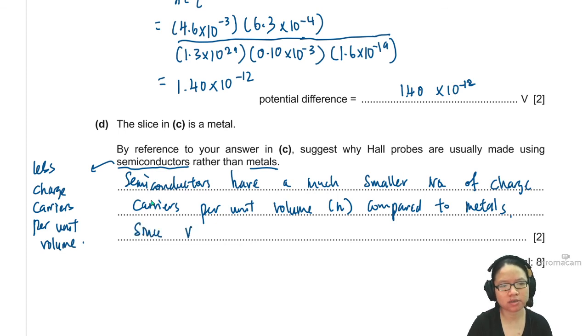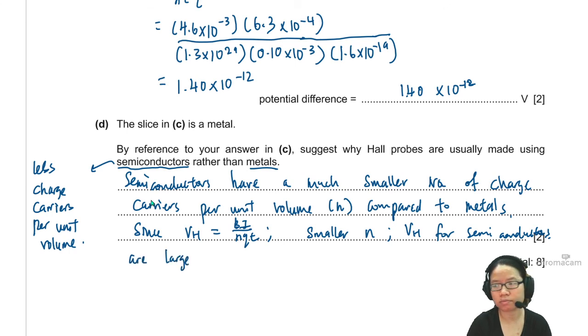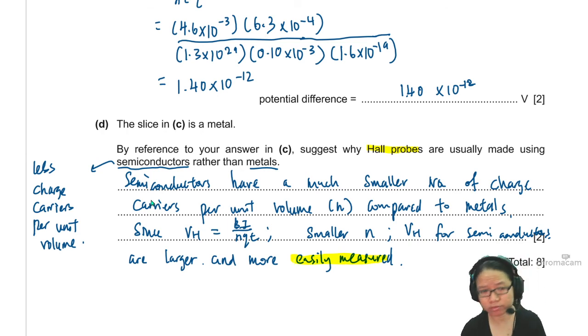You can say since VH is equal to BI over NQT, smaller N means there is a... This means VH for semiconductors are larger and more easily measured. Don't just stop at larger, you should explain why we want larger. Because they are talking about using the Hall probe. So the term easily measured should also be there, not just larger. Because this negative 12 is kind of small. So this is the question about Hall probe. How about this method? What do you think?